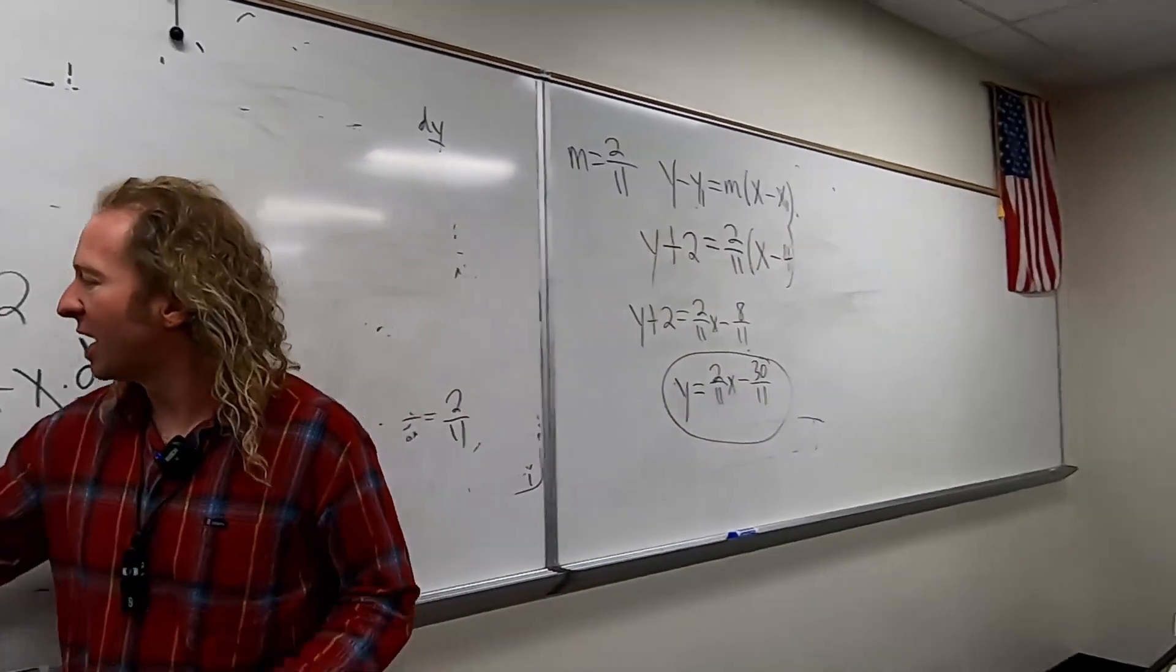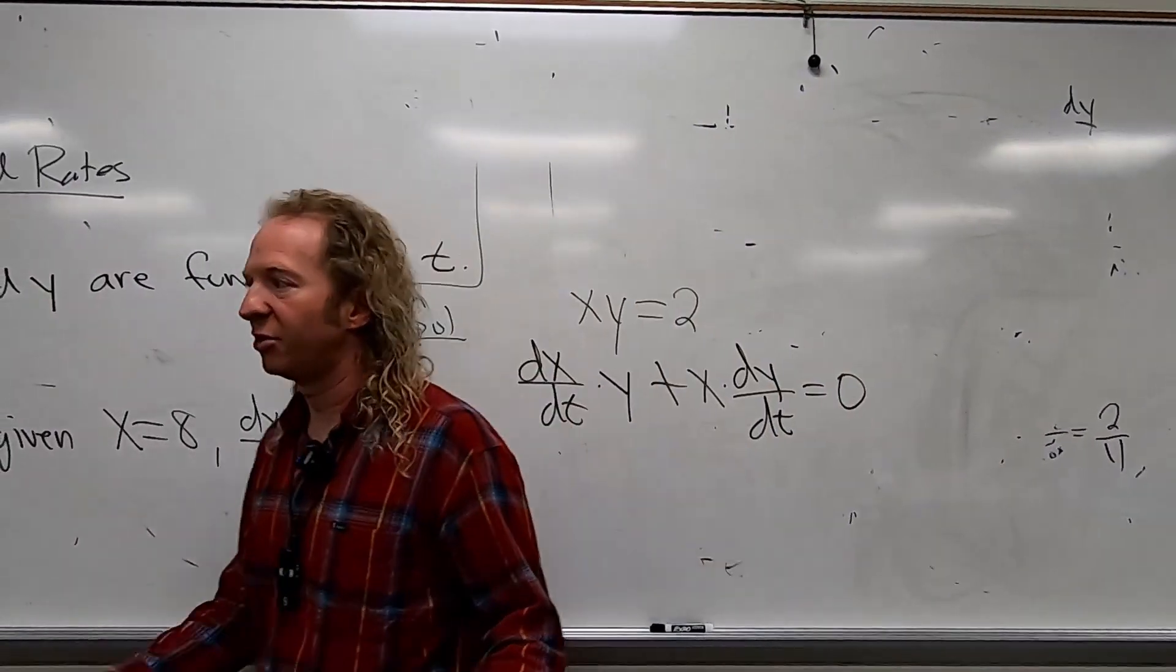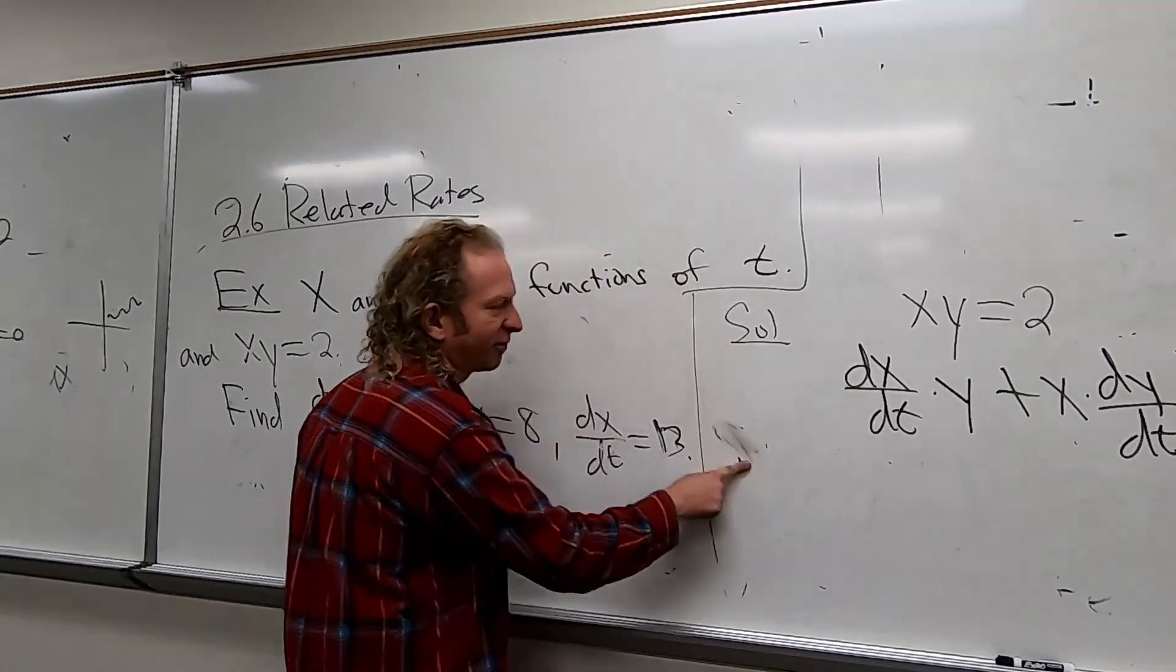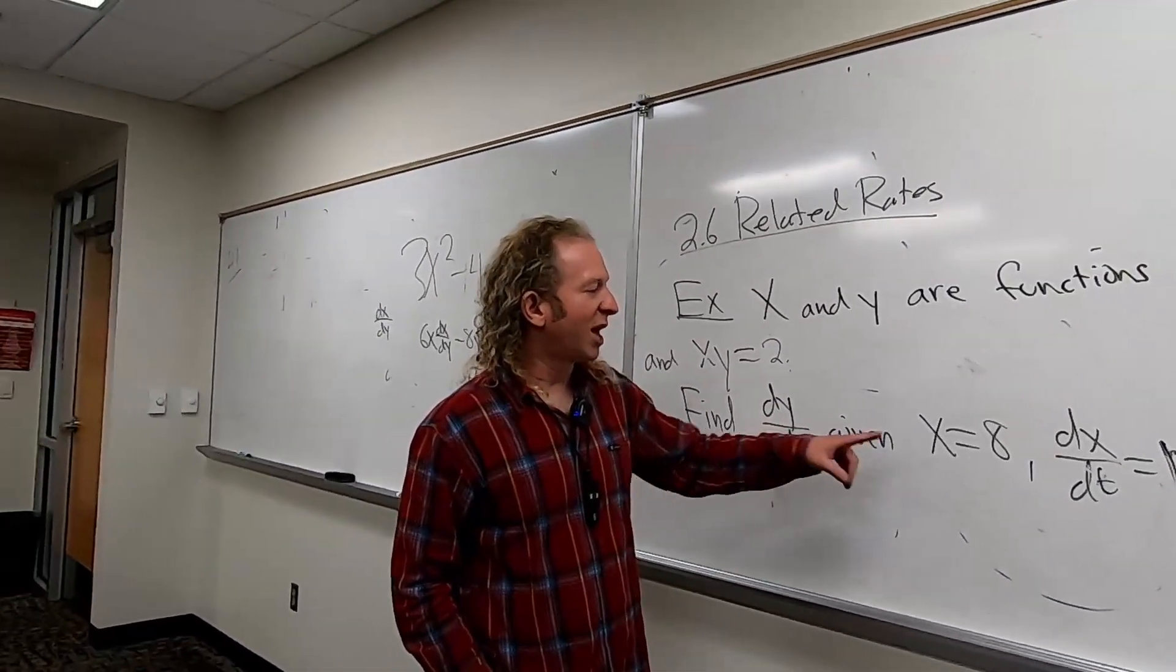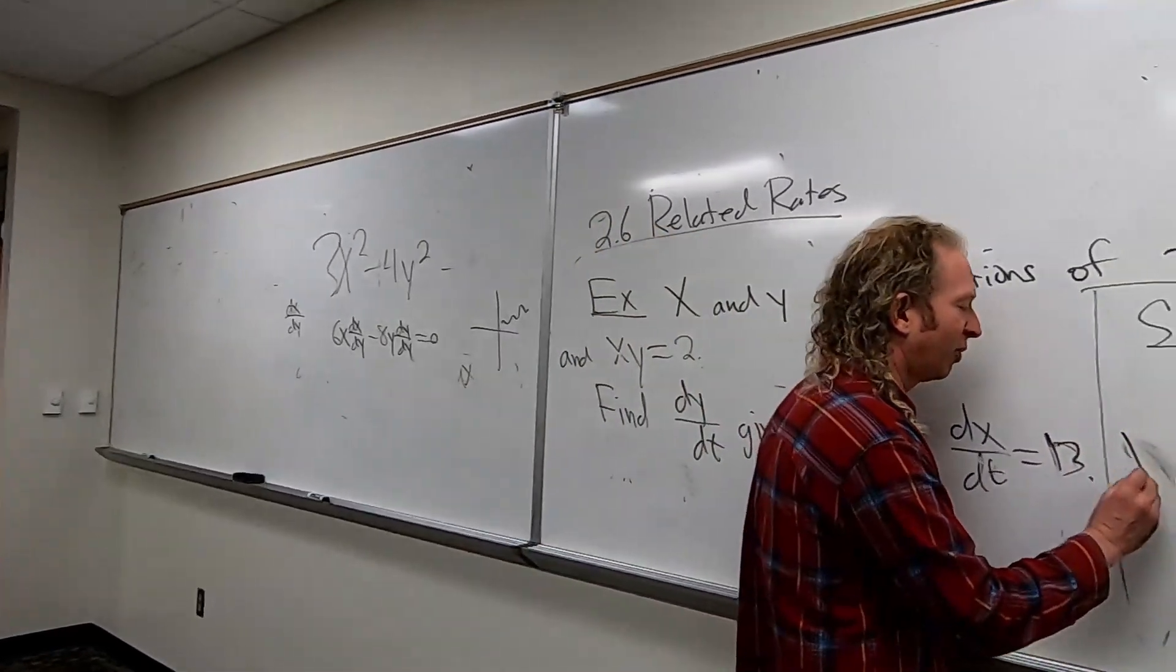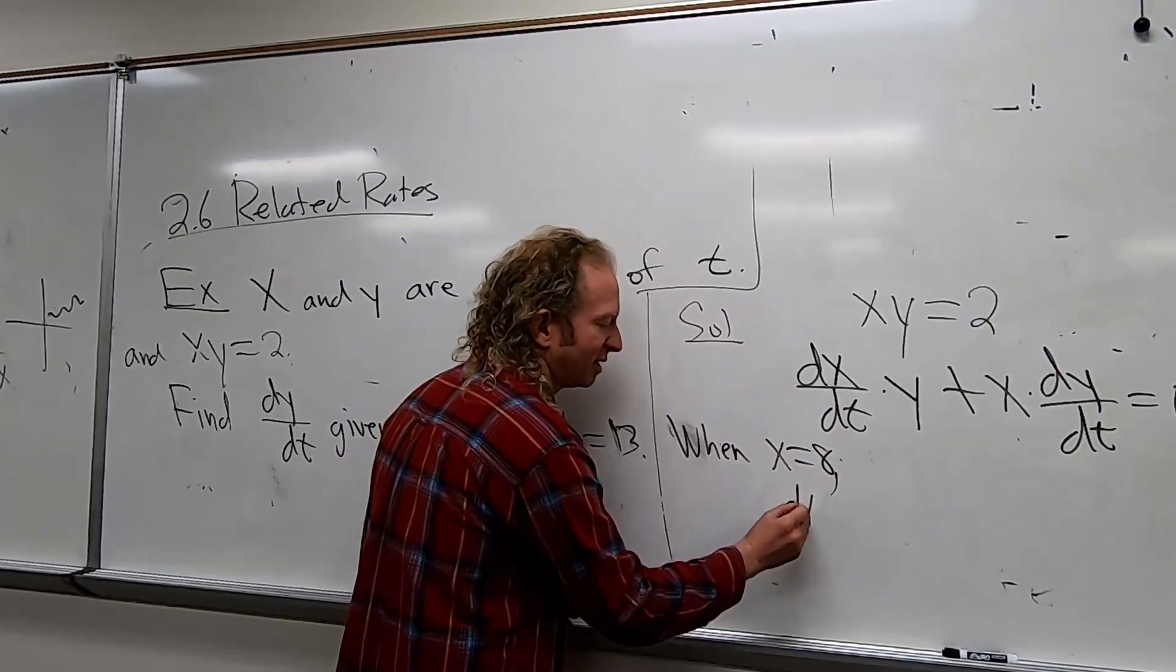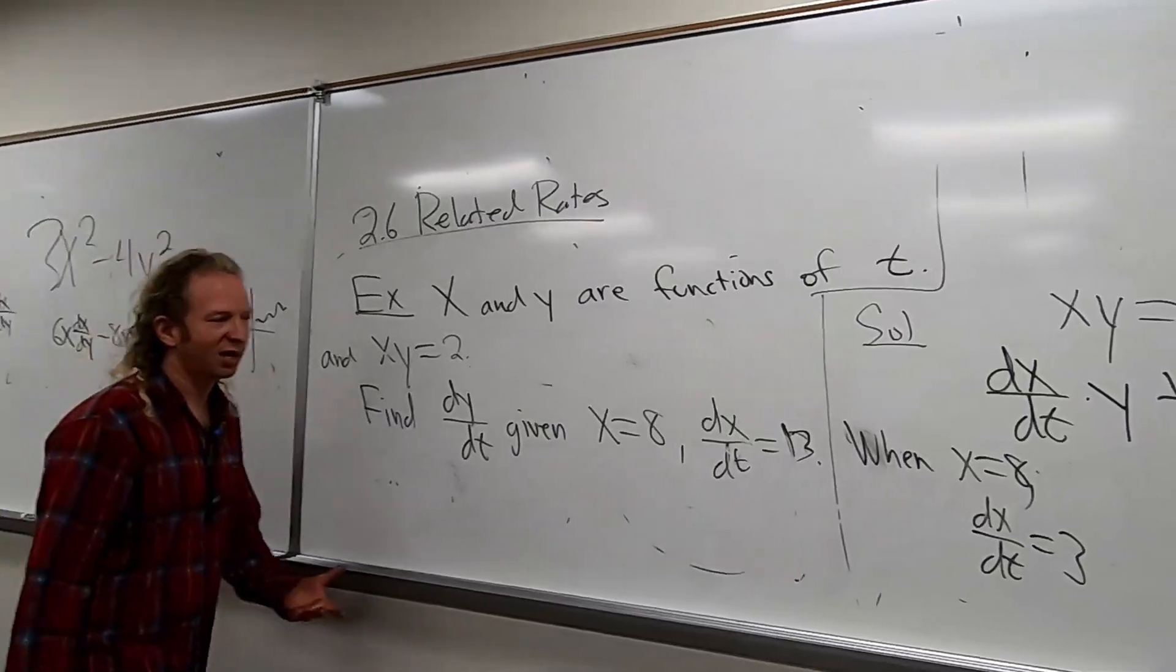Yeah, let's plug stuff in. Again, so now we'll plug stuff in. So let's do it. So plug. Oh, okay. So before we plug stuff in, I guess when x is 8 and dx/dt is 13, so let me write that down. So when x is 8, dx/dt is 13. So we have these two conditions.